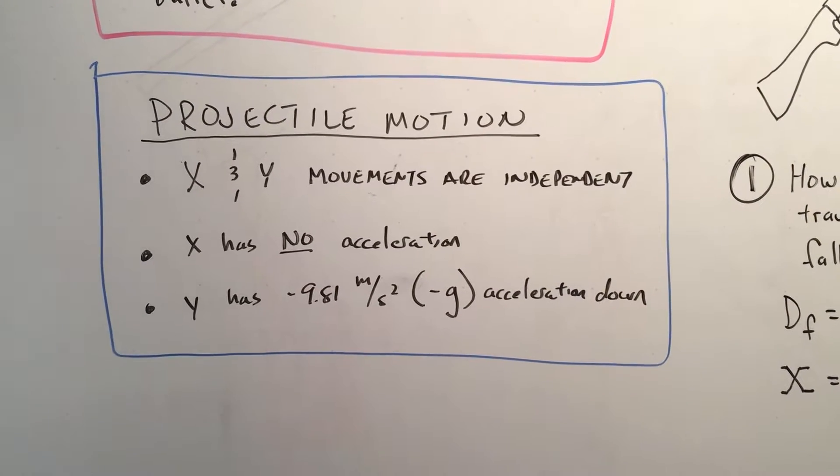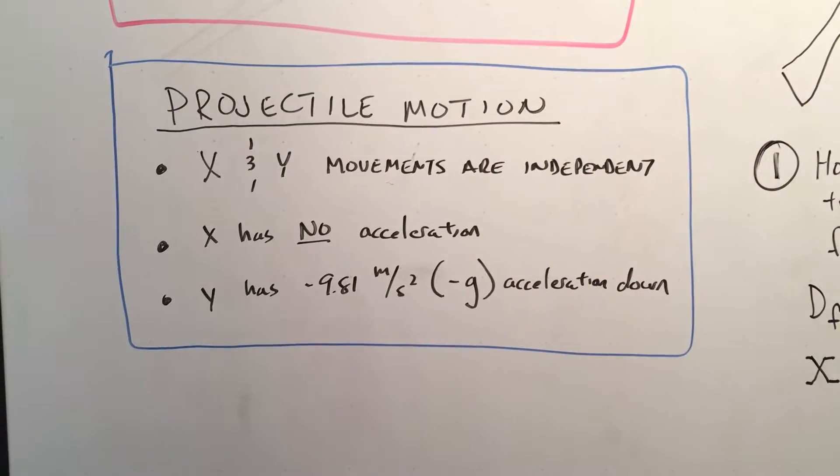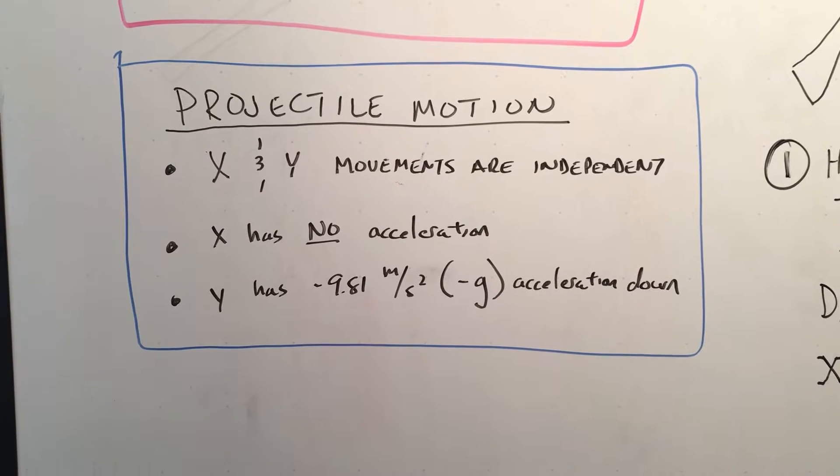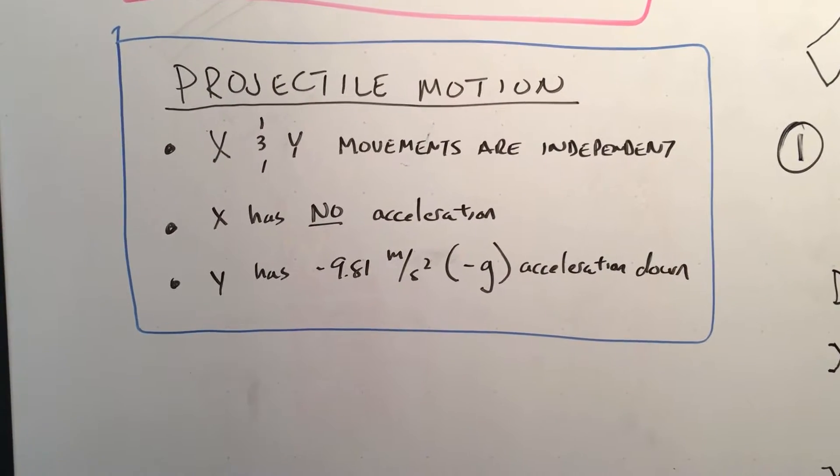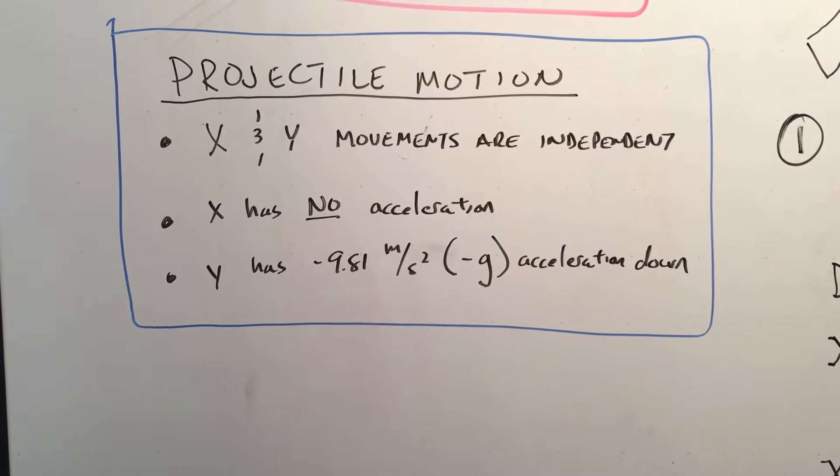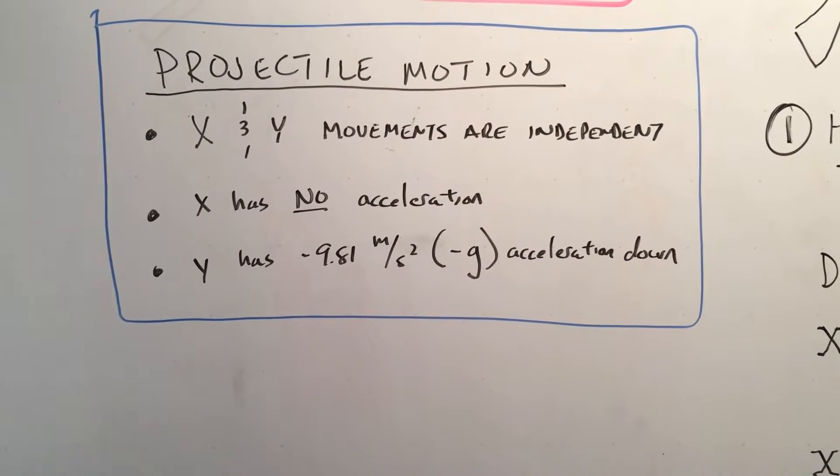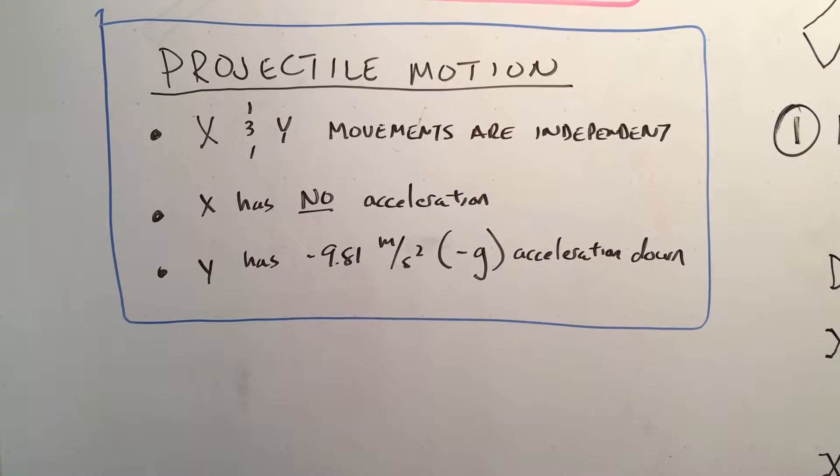So before we get started, one thing we want to note here is that in projectile motion, the X and Y movements are independent. Horizontal or X has no acceleration. Y has negative 9.81 meters per second squared or minus g acceleration down.